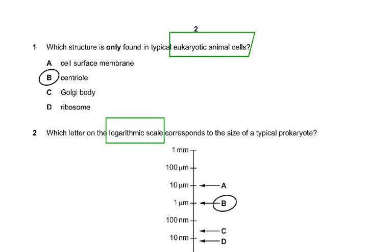Question one asks which structure is only found in typical eukaryotic animal cells. They didn't say eukaryotes generally because that would include animal, plant, fungus, protozoa, and protoctista. Cell membrane is present in all prokaryotes and eukaryotes. Chloroplasts are in eukaryotic plant cells, and ribosomes are present in all. The answer is centriole — it is only found in typical eukaryotic animal cells.